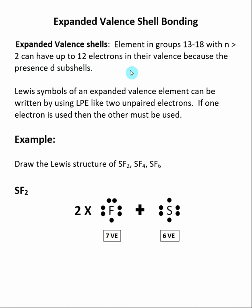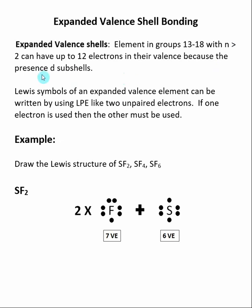Elements below n equals 2 in the P block have the possibility of expanded valence shell bonding. They can still bond to have an octet, but they can have more than eight electrons — up to a maximum of 12. This is due to the presence of a d subshell, which you will understand better when we talk about bonding. When n is equal to 2, we don't have d orbitals available for bonding, so those elements must follow the octet rule.